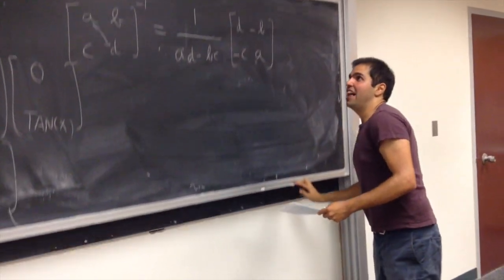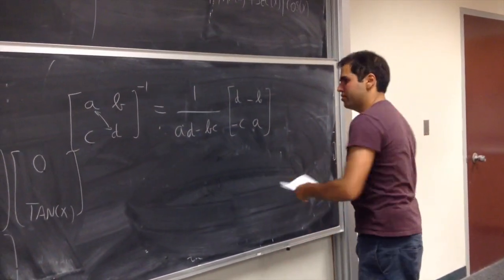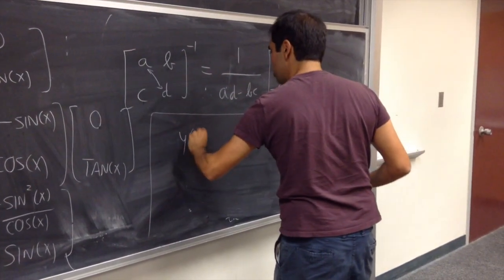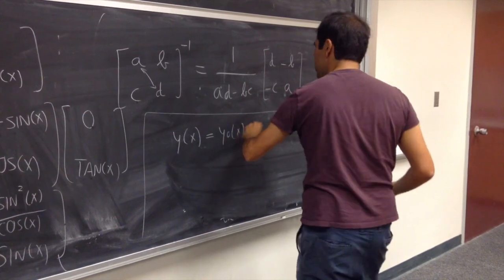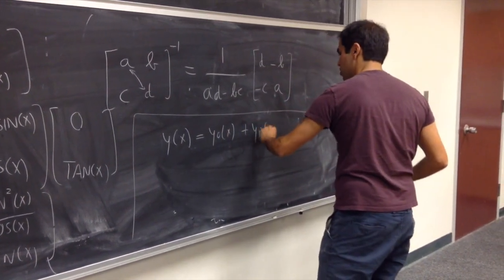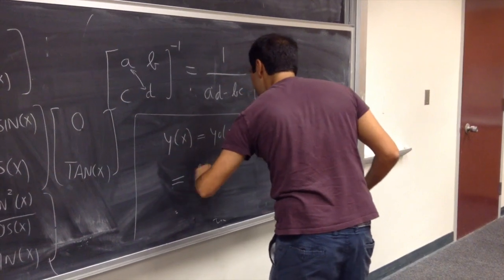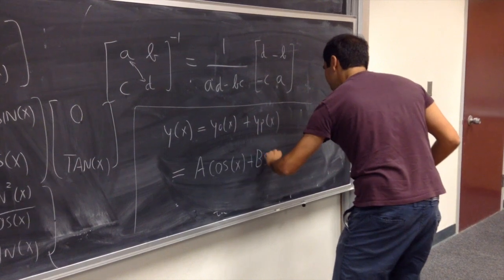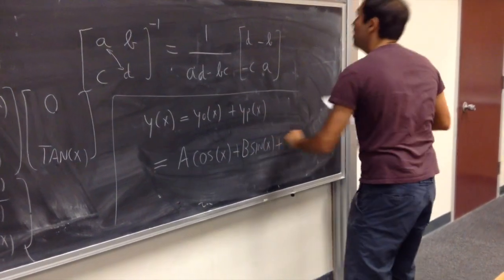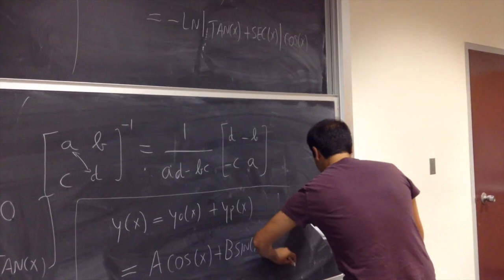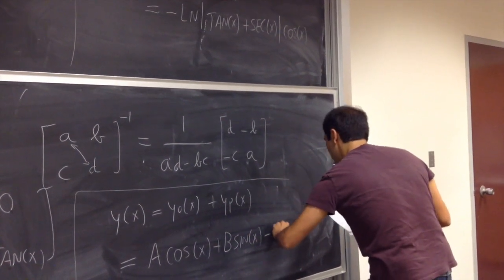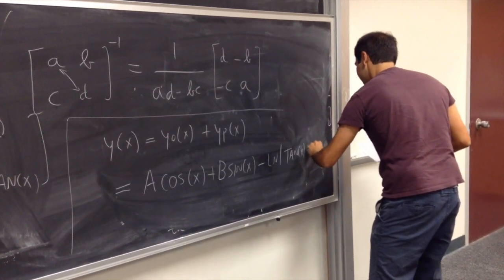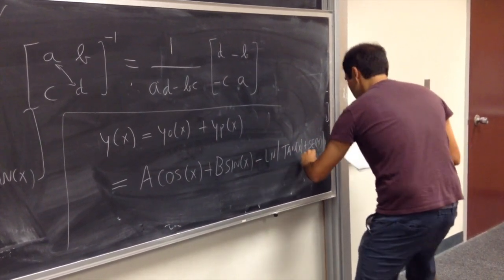Finally, the general solution is the homogeneous solution plus the particular solution: y = a·cos(x) + b·sin(x) + [−ln|tan(x) + sec(x)|]·cos(x).